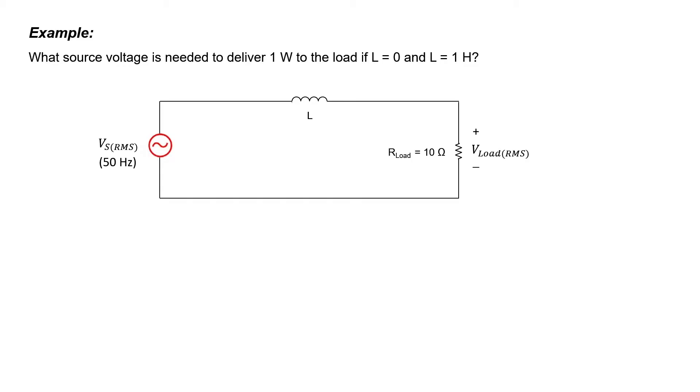I'm going to consider a situation where we need to deliver a fixed amount of power to a load resistor. The two situations are: we're going to have an inductor in the circuit path, or we're not going to have an inductor in the circuit path. Let's look at the situation without an inductor first, and let's say that we need to deliver one watt to a 10 ohm load.